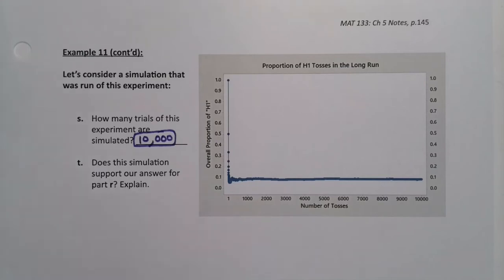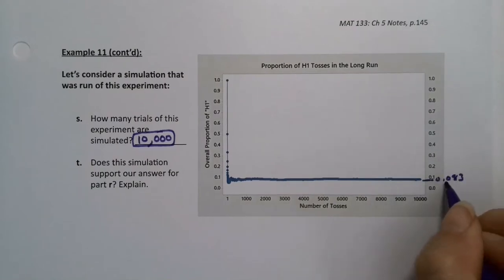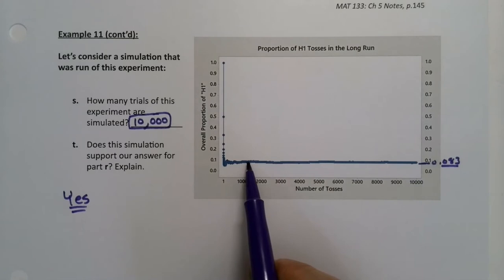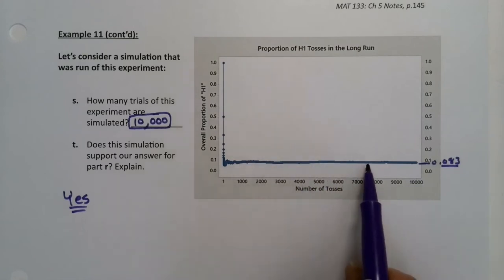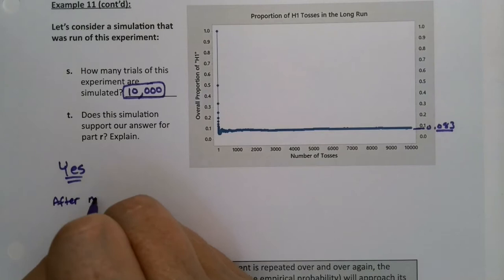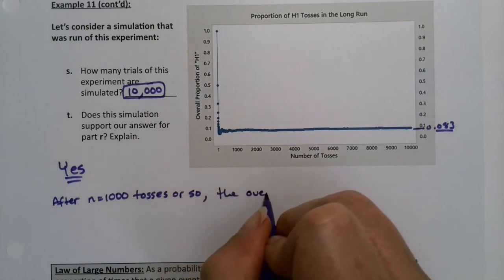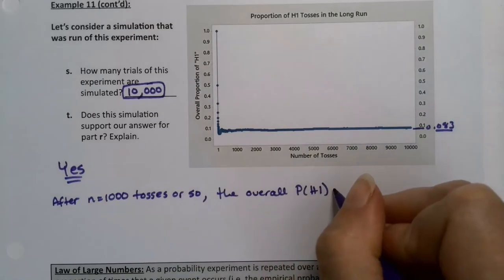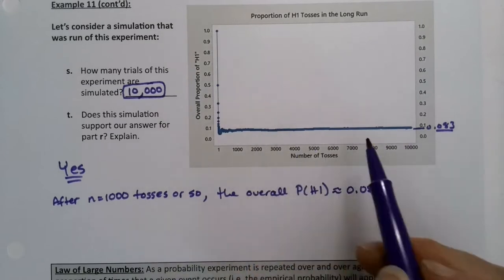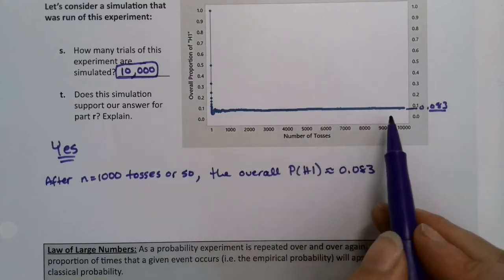Now, does this simulation support our answer? Look at what it's getting closer and closer to — you see that line just below 0.1? That's 0.083. The answer is yes. It's settled down close to 0.083 after just a bit — after about the first 1,000 tosses or so it's really settled into 0.083. The overall probability is very close to 0.083 and remains there, nudging just a little bit up and down.